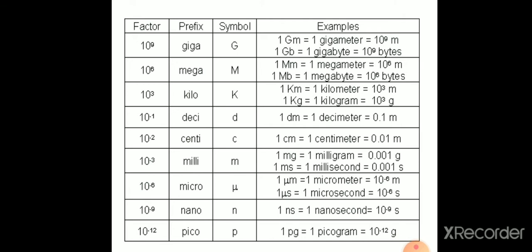We add the prefix giga for the factor 10 raise to 9, mega for 10 raise to 6, kilo for 10 raise to 3, deci for 10 raise to minus 1, centi for 10 raise to minus 2, milli for 10 raise to minus 3, micro for 10 raise to minus 6, nano for 10 raise to minus 9 and pico for 10 raise to minus 12.